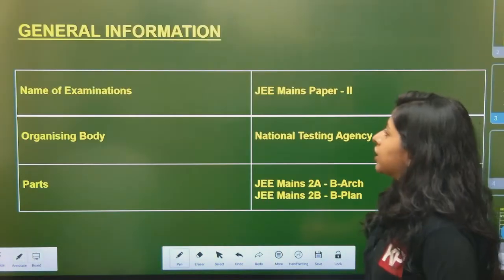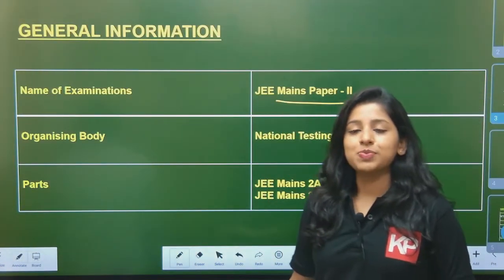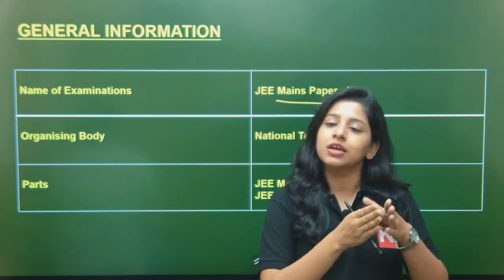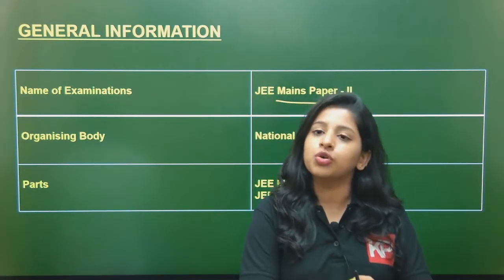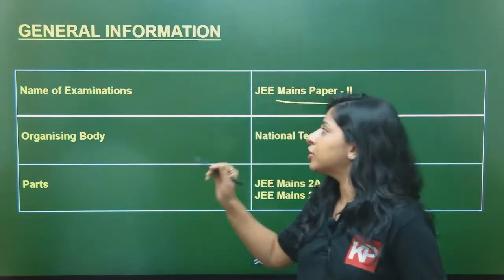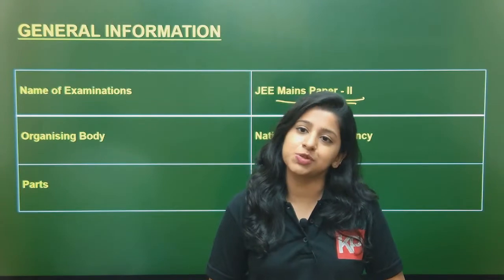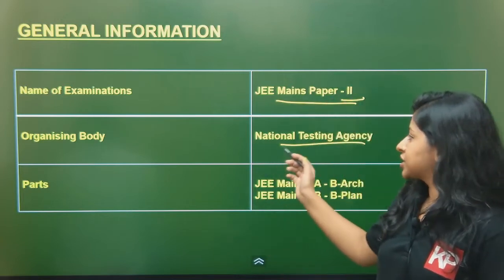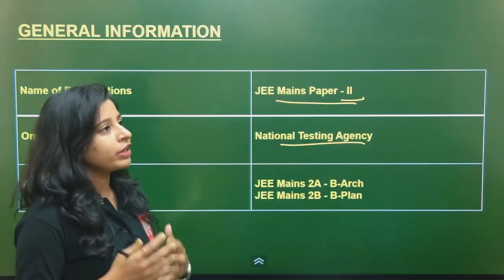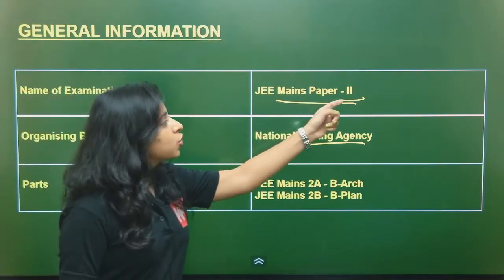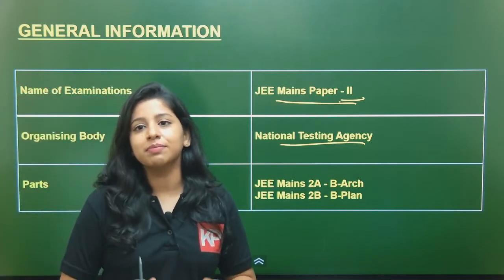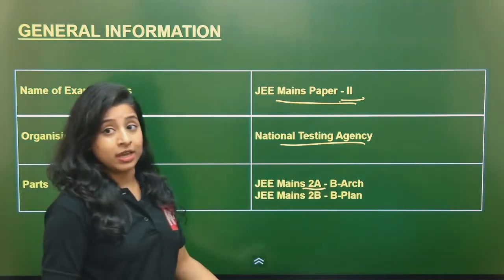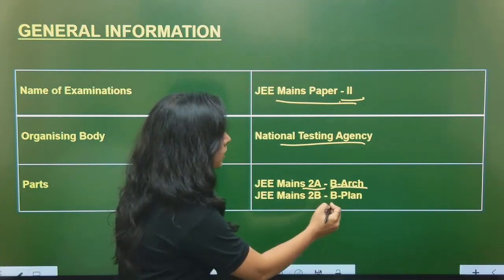In JEE Mains there are two papers: Paper 1 and Paper 2. Paper 1 is for engineering students who want to pursue B.Tech after class 12, while Paper 2 is for architecture aspirants. The organizing body is NTA — the National Testing Agency — for both papers. Paper 2 itself has two types: JEE Mains 2A for B.Arch and JEE Mains 2B for B.Plan.